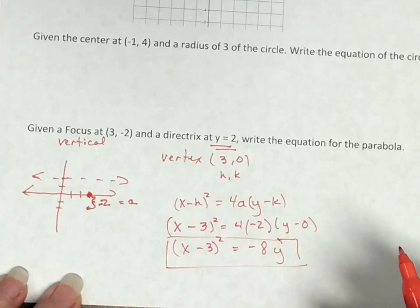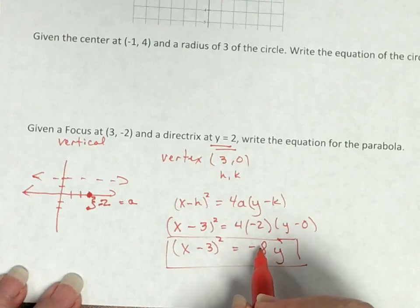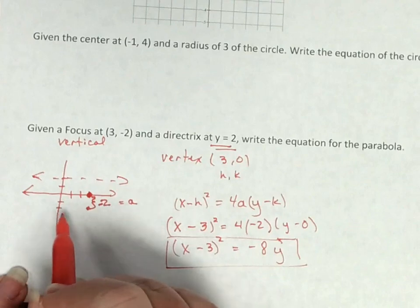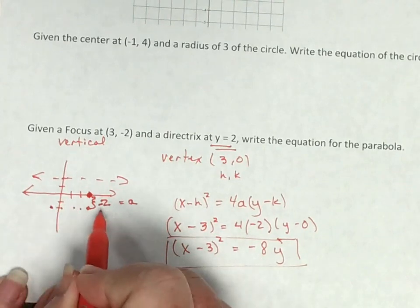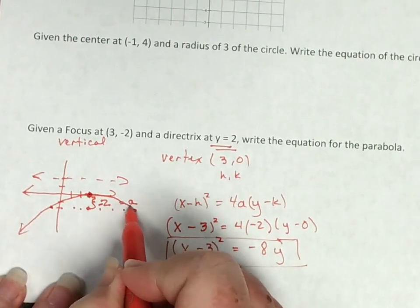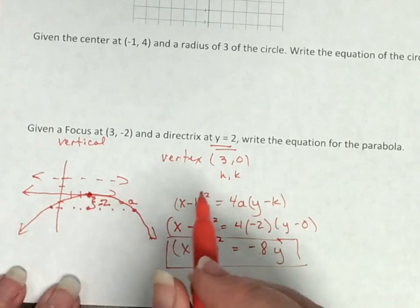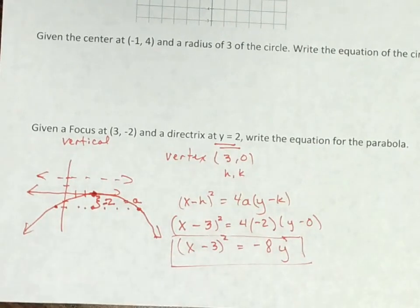To finish graphing it, I know the latus rectum is 8 units long, through the focal point and parallel to the directrix, so I go 4 to the left and 4 to the right. Connecting the three key points gives us the parabola — a vertical parabola pointing down because our a value was negative. Good luck with your homework.